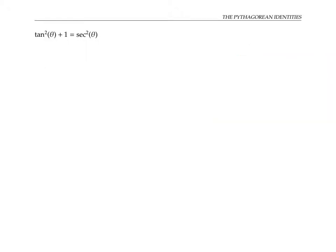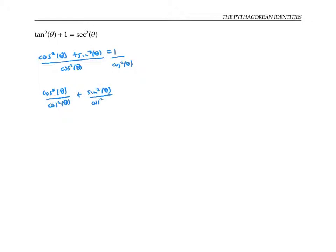To prove the next Pythagorean identity, tan squared theta plus one equals secant squared theta, let's use the first Pythagorean identity, which says cosine squared theta plus sine squared theta equals one. I'm going to divide both sides of this equation by cosine squared theta, and then rewrite the left side by breaking apart the fraction into cosine squared theta over cosine squared theta plus sine squared theta over cosine squared theta.